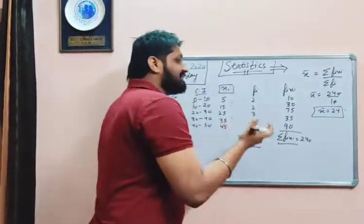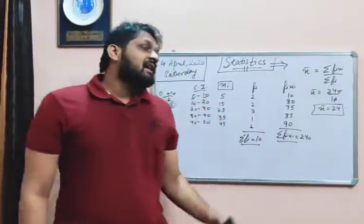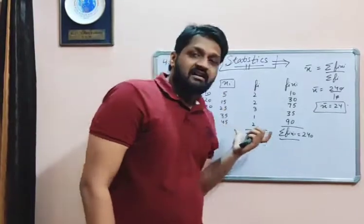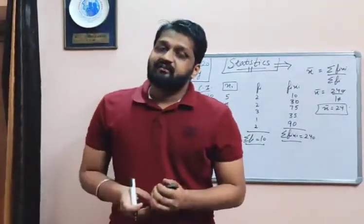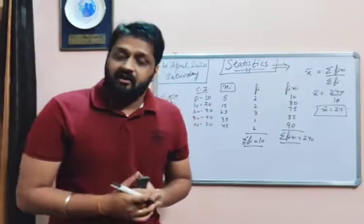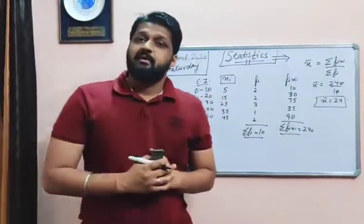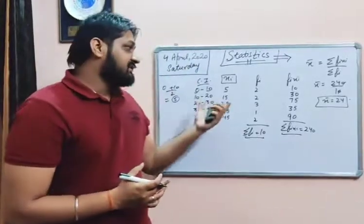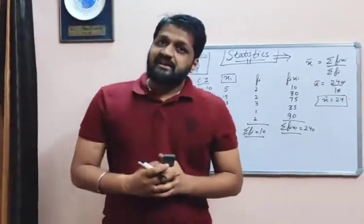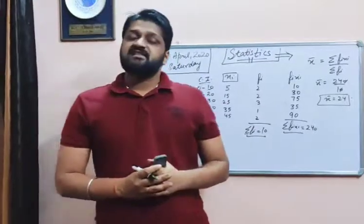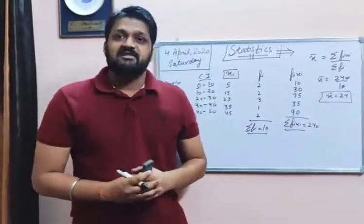So in this way we can find the mean using the direct method for grouped data. For ungrouped data, where individual data is given, we find the mean as the sum of observations divided by the total number of observations. Do practice questions on the direct method. In the next video, we will discuss the other two methods: the assumed mean method and the step deviation method. Thank you.